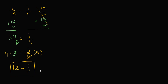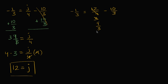The neat thing about equations is you can verify that you got the right answer. You can substitute 12 for j and verify that negative 1/3 equals 12/4 minus 10/3. Does this work out? Well, 12/4 is 3, and if I write that as thirds, it's 9/3. And 9/3 minus 10/3 is indeed equal to negative 1/3. So we feel very good about that.